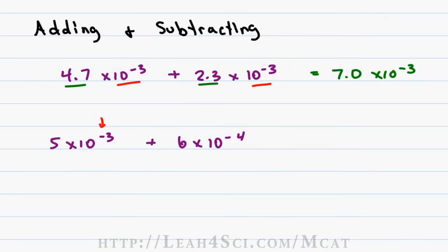So if I take 10 to the minus 3 and divide that by 10, I get 10 to the minus 4. I have to justify that by multiplying this number by 10. 5 times 10 is 50.